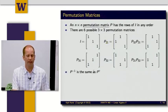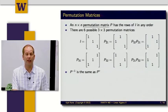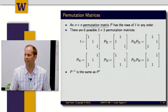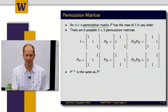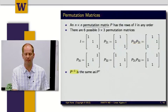Another key property is that P inverse equals P transpose for any permutation matrix. For P_{2,1}, being symmetric and its own inverse makes the matrix, its inverse, and its transpose all the same. For more complicated permutations that swap more pairs of rows, P inverse still equals P transpose, but these matrices are no longer their own inverses.